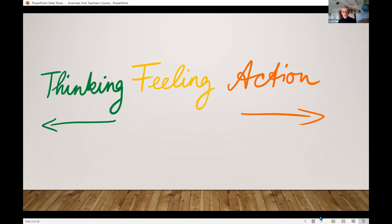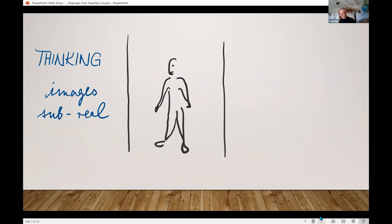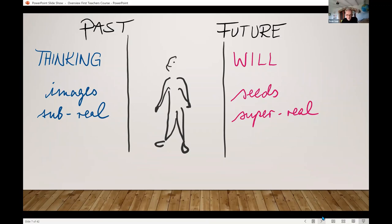An image is always sub-real - an image of a tree is not a tree. I can picture my nose but can't smell anything with that image. In contrast, a seed is super-real. If you cut open an acorn there's no little tree in there, yet it contains the whole future oak tree. The picture is less than real, the seed is super real. One is connected to the past, thinking. The other to the future, the will, the action.